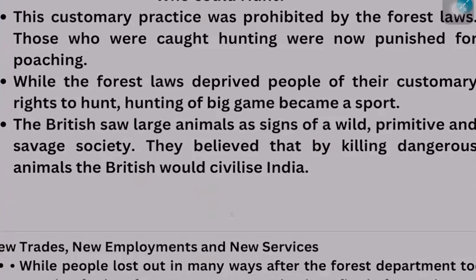The British banned hunting for common people but they themselves could hunt. Because they thought wild animals like lions and tigers were threats, they used to organise hunting sports. And the people who killed the tigers were rewarded — like Maharaja Sarguja, who killed around 3,000 tigers. The British were allowed to hunt, but the common people who hunted for small items or used forest products like a deer's horn were not allowed.